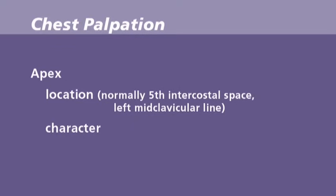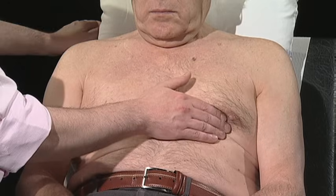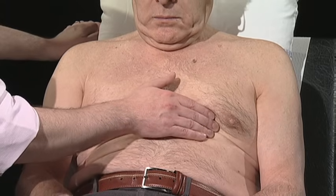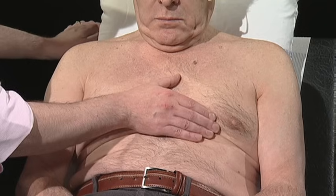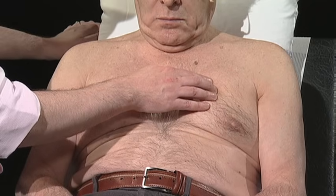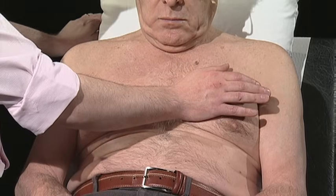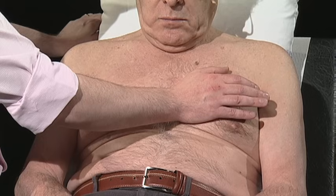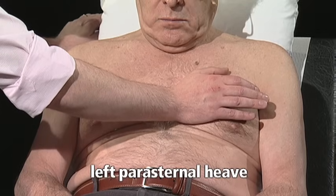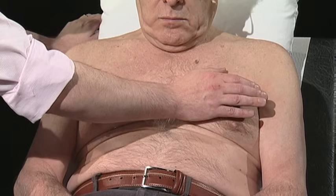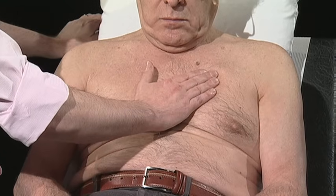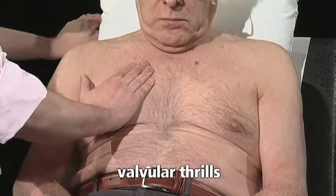If the apex beat is hard to locate, you can ask the patient to roll to their left, but you will no longer be able to comment on the position of the apex. I'm now going to feel for your heart and I'll just check its location. Palpation with the base of my hand just left of the sternum might identify a parasternal heave, which would indicate right ventricular hypertrophy. Palpating over the valvular areas might identify the presence of a thrill.